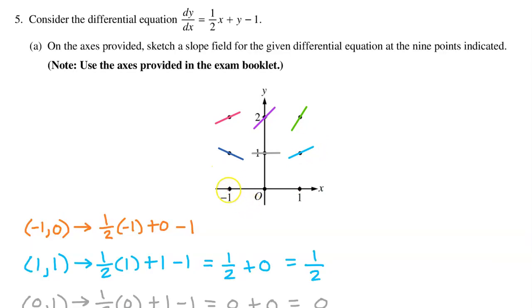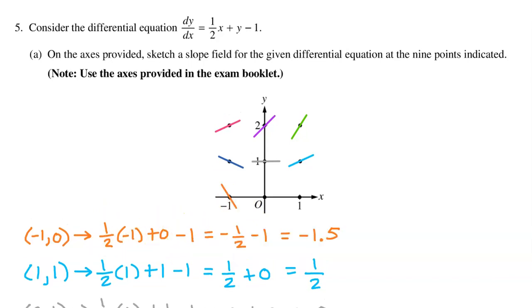At the point (-1, 0), we have one-half times negative 1 plus 0 minus 1. This equals negative 1.5, so draw a decreasing slope steeper than a 45-degree angle.